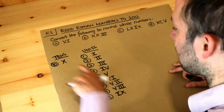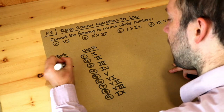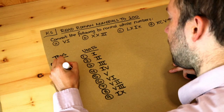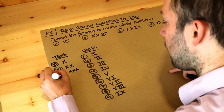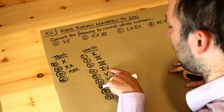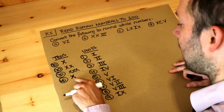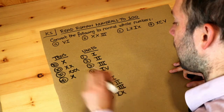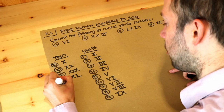Now let's go on to the tens. Ten is x. Twenty is xx, and it's going to be very similar — thirty is xxx, just like three is iii. Now forty: we probably want ten less than fifty, just like for four we have one less than five. So we want x less than fifty. Now fifty is l in Roman numerals, so forty is xl.